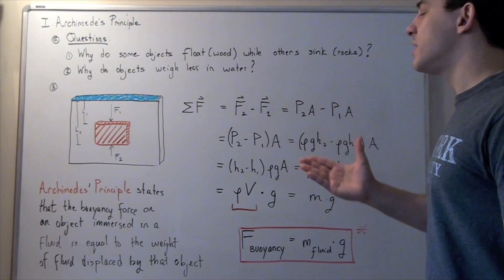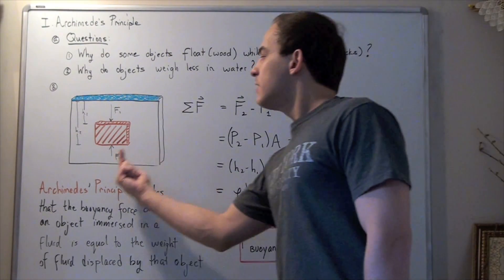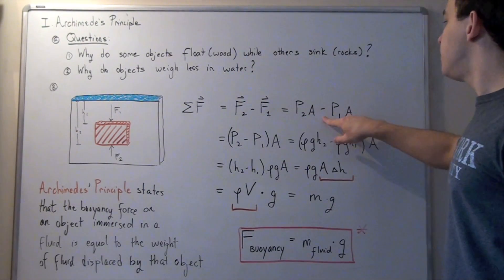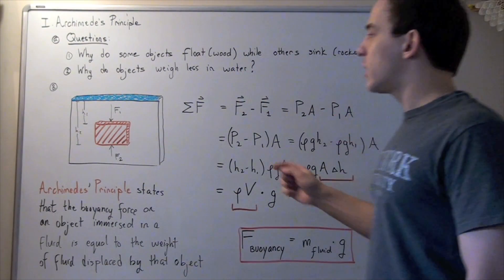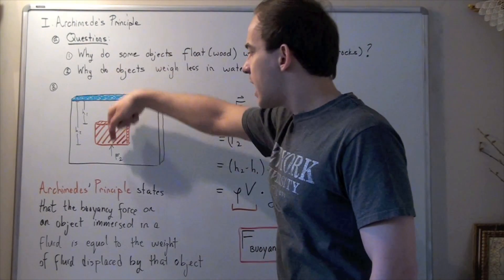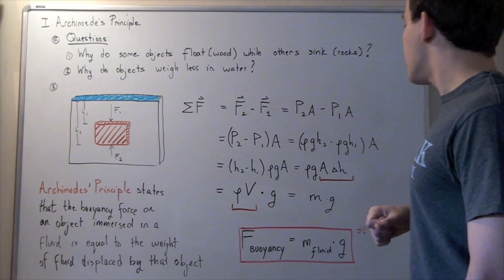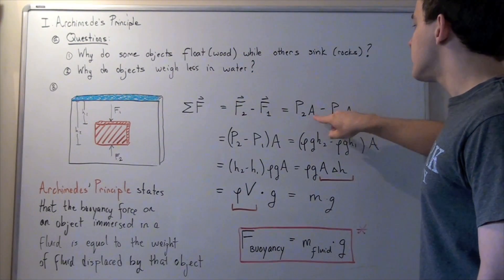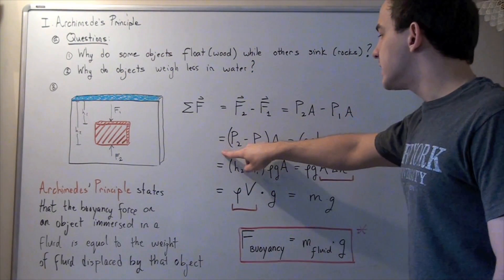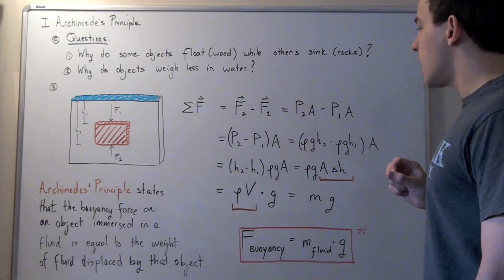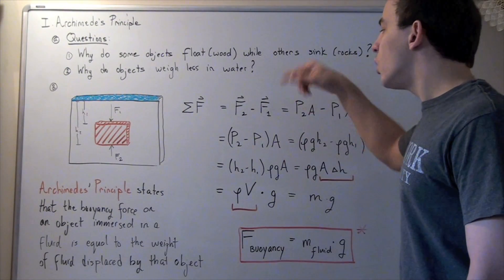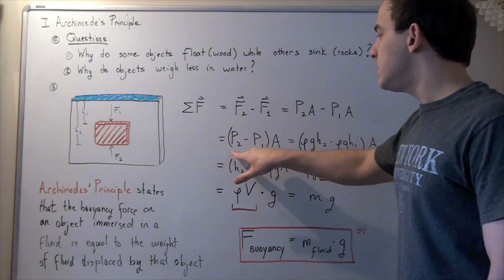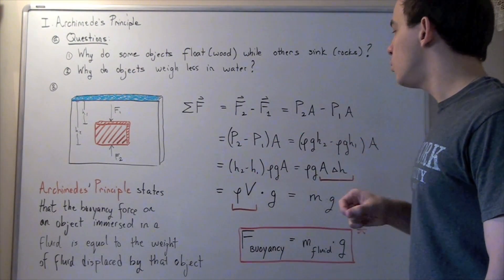Now, P2 is simply the pressure at the bottom face going upward, and P1 is the pressure at the top face going downward. Now let's factor out A, and we get A multiplied by the quantity P2 minus P1.